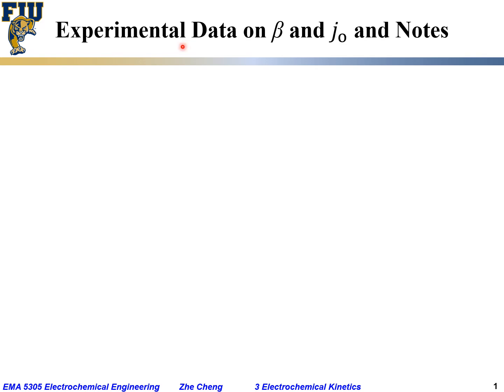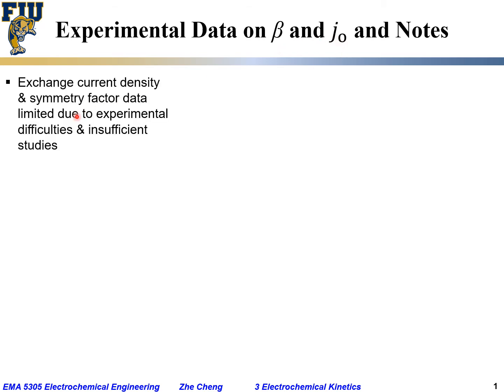Finally, let's look at some experimental data, actual experimental data on beta symmetry factor and J0 exchange current density. In the literature, the number of exchange current density data and symmetry factor, we have to admit, is very limited. You do not get a lot of this data because of experimental difficulty and insufficient studies.